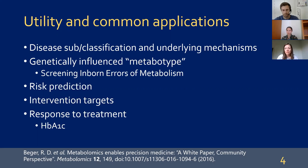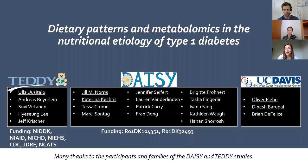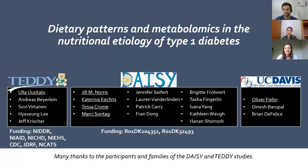This connects to the idea of genetically influenced metabolites and risk prediction. For intervention targets and treatment response, A1C in diabetes is a great example — it's a dynamic-state compound that reflects how well someone is adhering to treatment or how well treatment is working. It's a continuous marker of molecular biological response. Most of my work has landed in the top two categories of disease classification and risk screening. I moved fairly quickly into a faculty position after a postdoc and met this group at the end of my PhD in Cambridge.